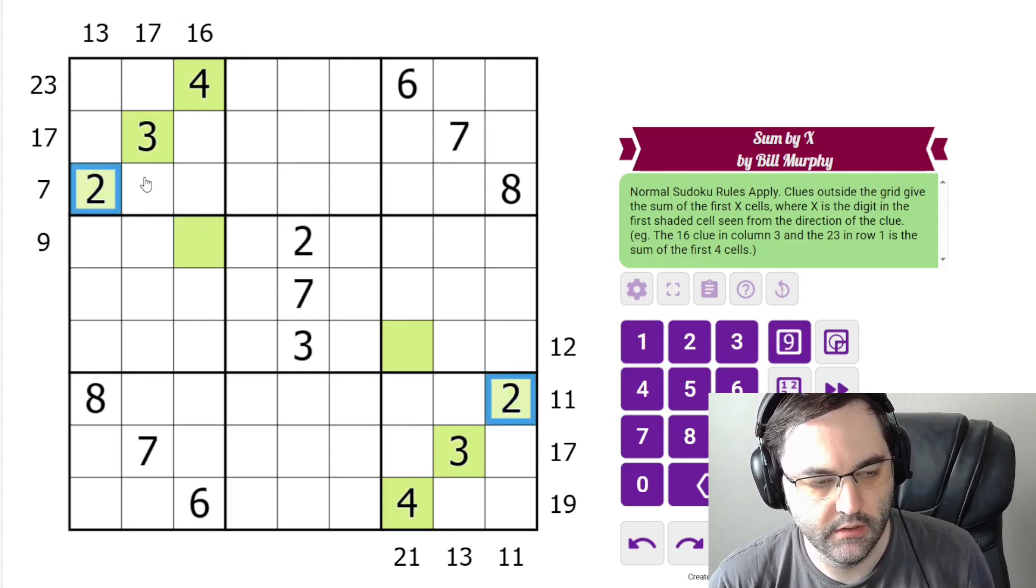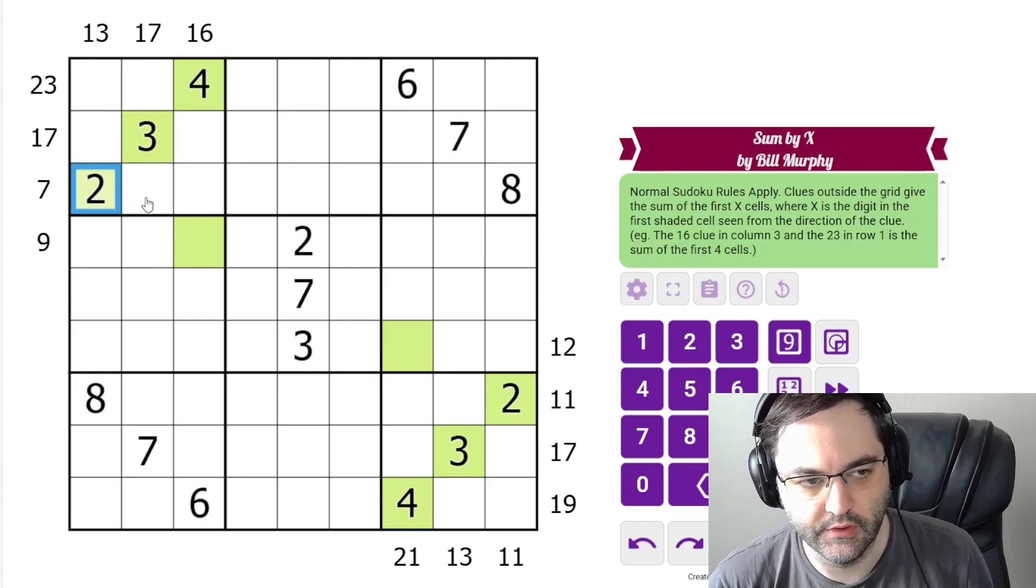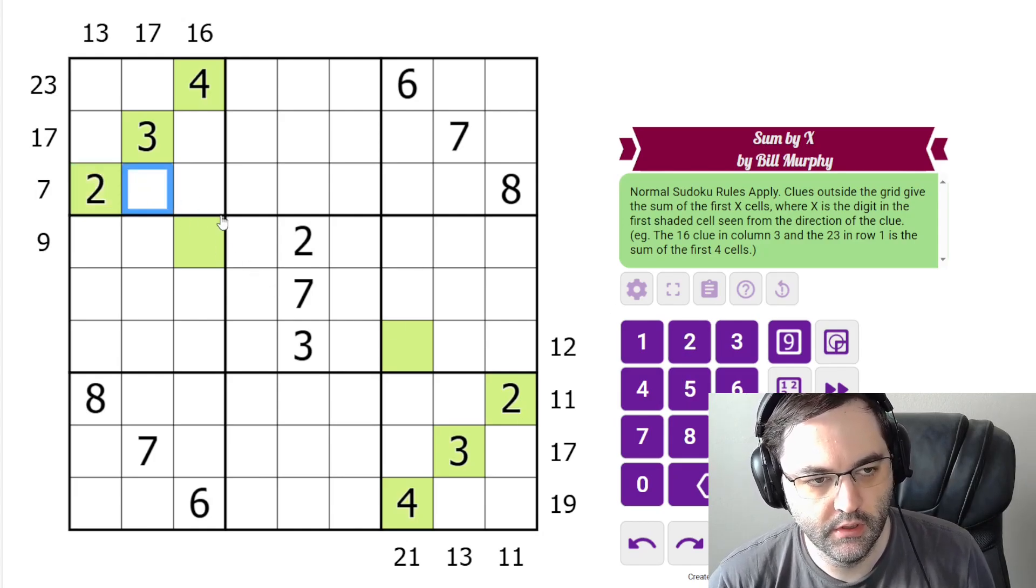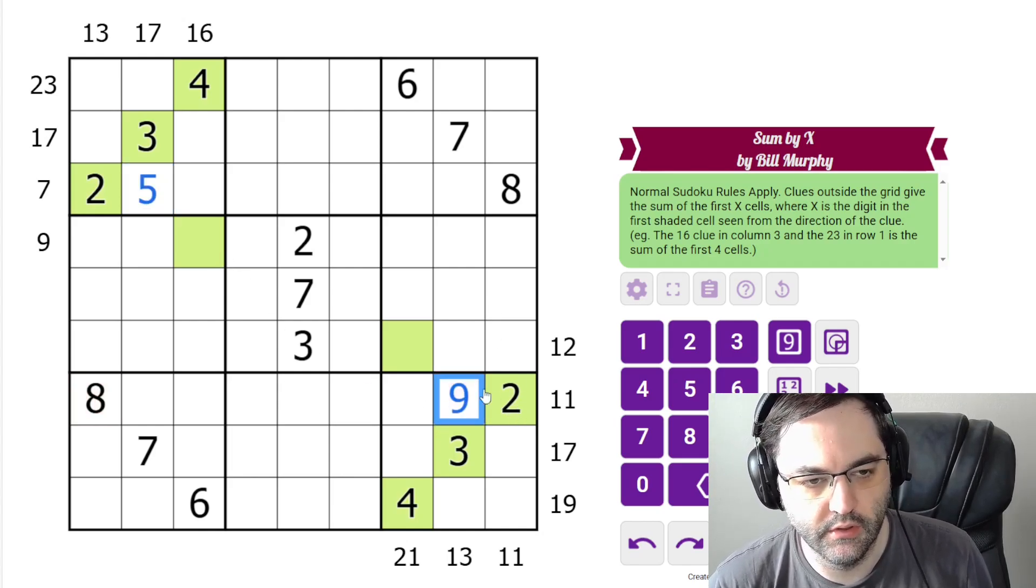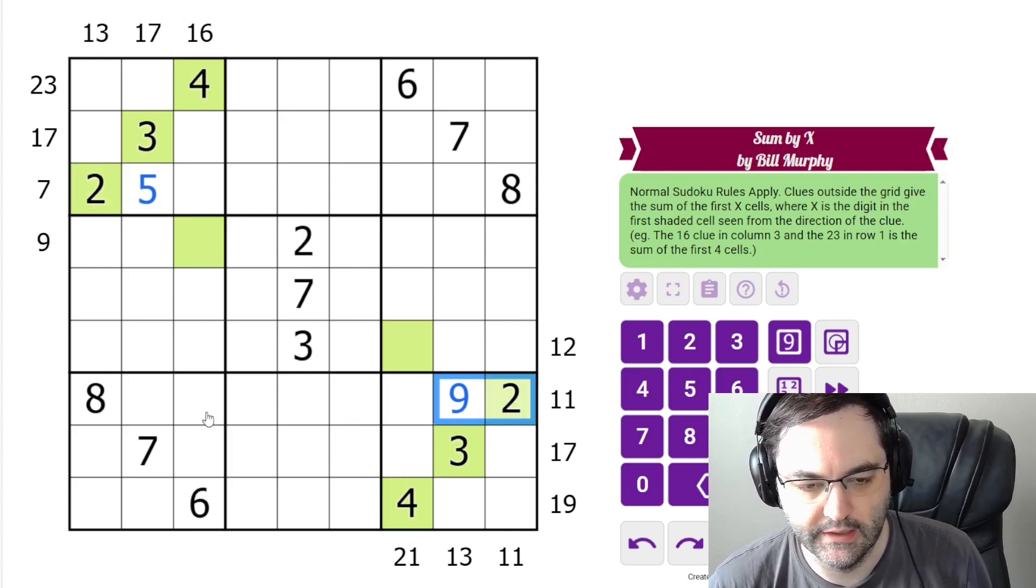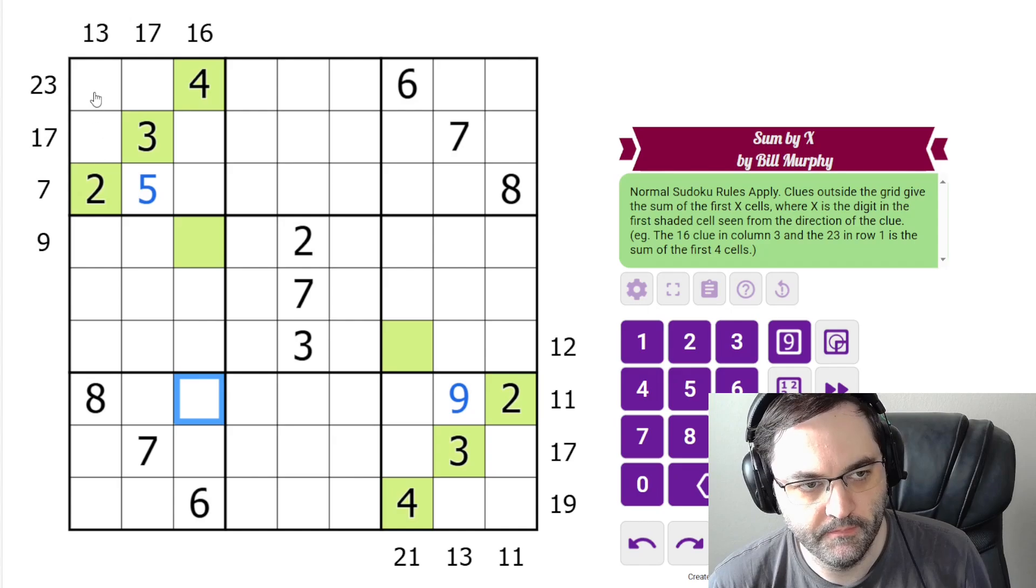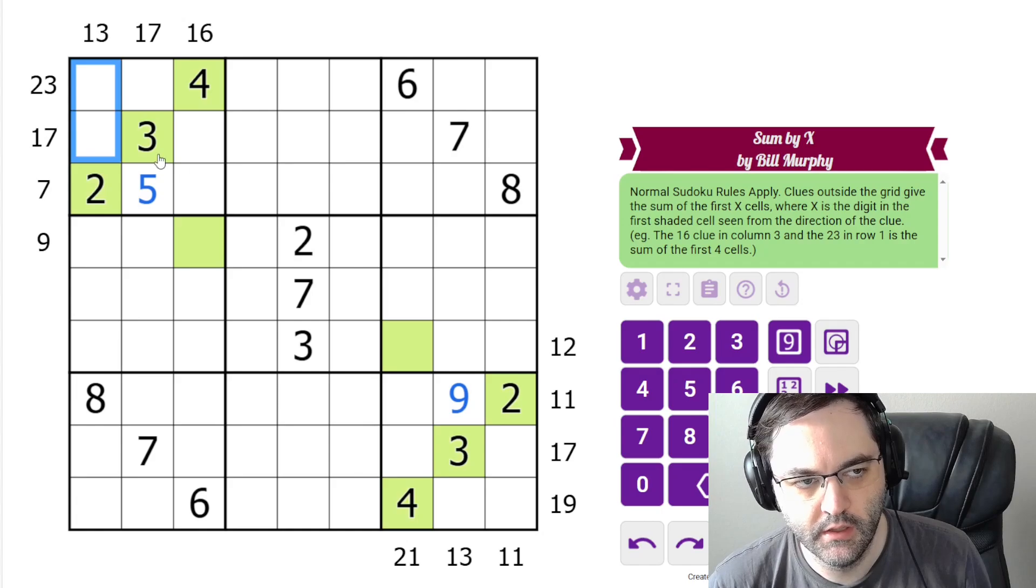This is something to keep in mind for XSums anyway. Bill has been nice and just given us the 2. But for some of these lower totals, oftentimes you'll end up with a 2 and you can just fill in the other digit. You don't have to worry about any more cells. So the first two cells sum to 7. First this way, we have 13.